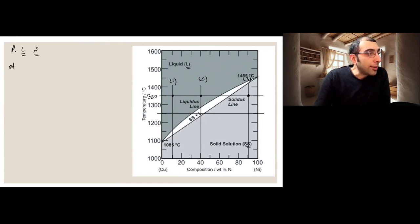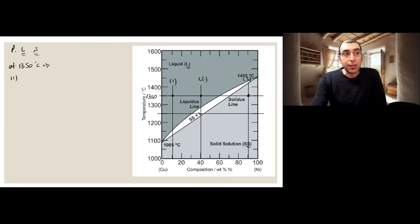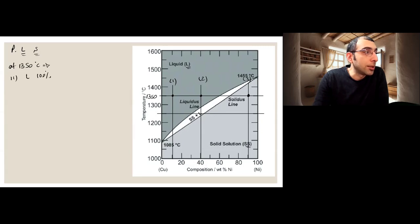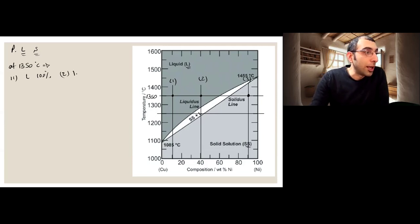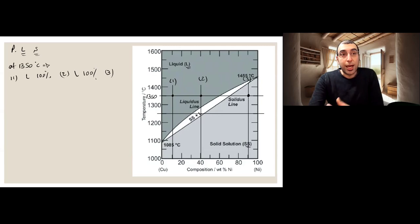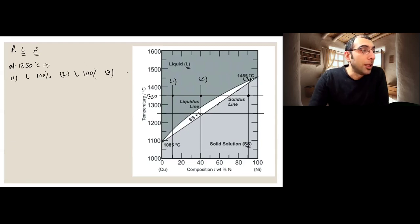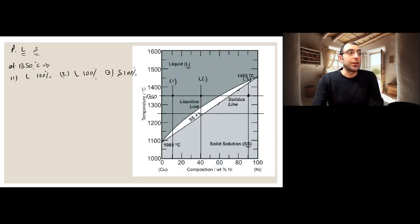At 1350°C for alloy number one, we are in the liquid phase and there's no other phase present, so we have liquid at 100%. For alloy number two, we are still in the liquid region with no other phase available, so also 100% liquid. For alloy number three at 1350°C with 90% nickel, we are below the solidus line in the solid region, so we have 100% solid.